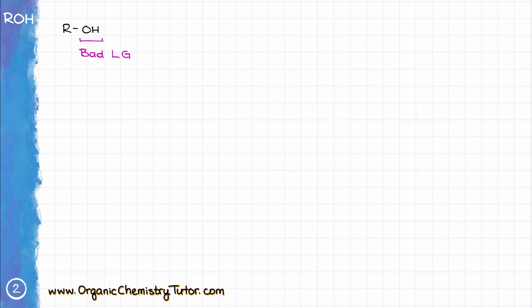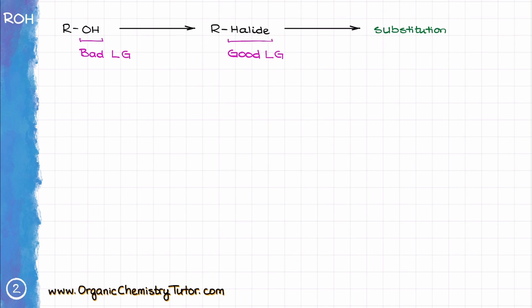We know that the OH is a bad leaving group, so sometimes it is a convenient switch if we want to replace an alcohol with something else in a substitution reaction. Or maybe we want to do an elimination reaction, and performing the elimination with the alcohol itself is just not feasible. The point is, the more functional group transformations we have in our toolbox, the easier it is for us to accomplish various syntheses.